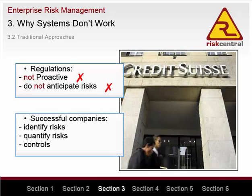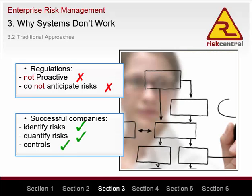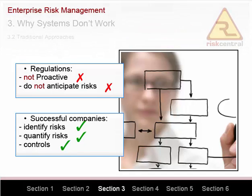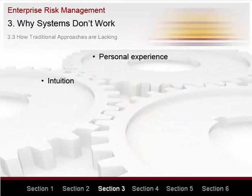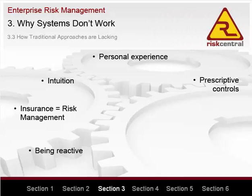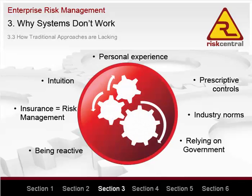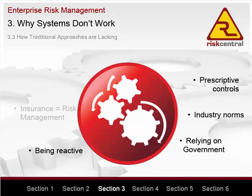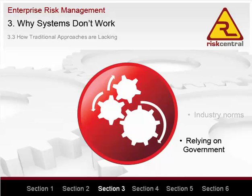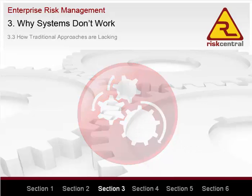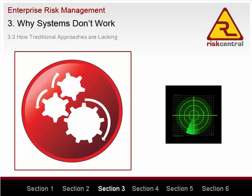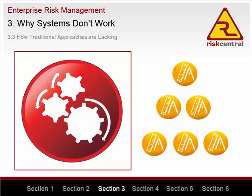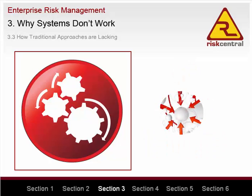In contrast, some organisations did identify and quantify these risks, and consequently had controls in place to reduce their losses. The previous individual approaches themselves are not to blame — there is nothing inherently wrong with traditional approaches and they all have their part to play in an ERM system. But they cannot be relied upon by themselves because they lack an overarching high-level systematic process to ensure that all significant risks are systematically identified, quantified, ranked and appropriately controlled.